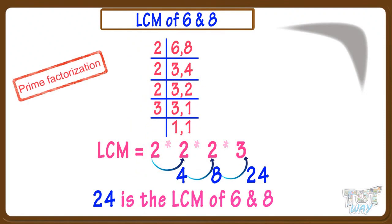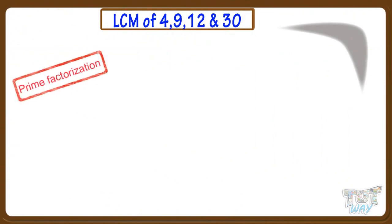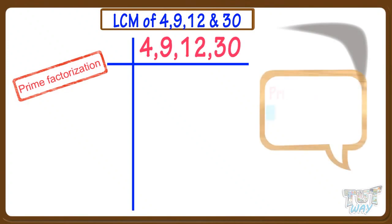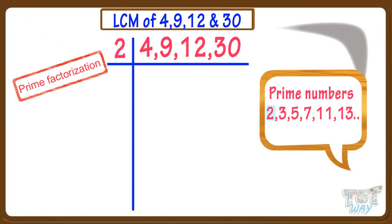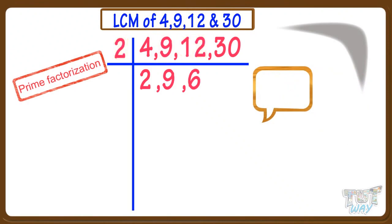Now let's take another example. We have to find the LCM of 4, 12, 9, and 30. First we do the prime factorization of these numbers. Write the numbers, then take the smallest prime number, that is 2. 4 divided by 2 equals 2. 9 cannot be divided, so write it as it is. 12 divided by 2 equals 6, so write 6. 30 divided by 2 equals 15, write 15.